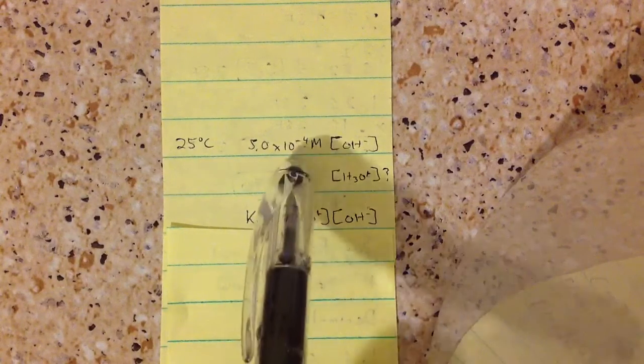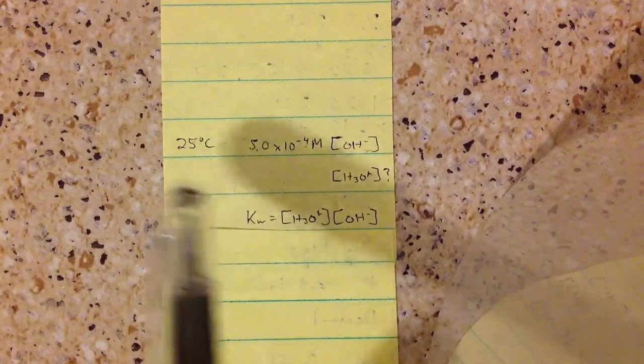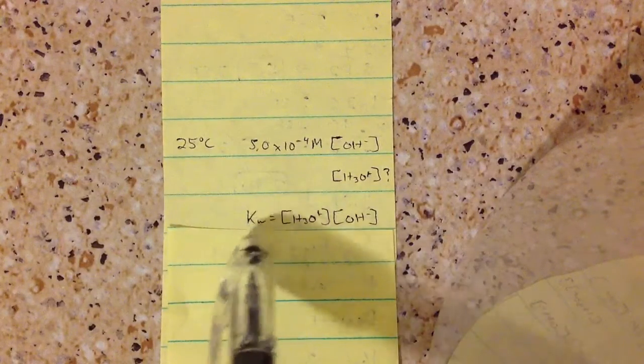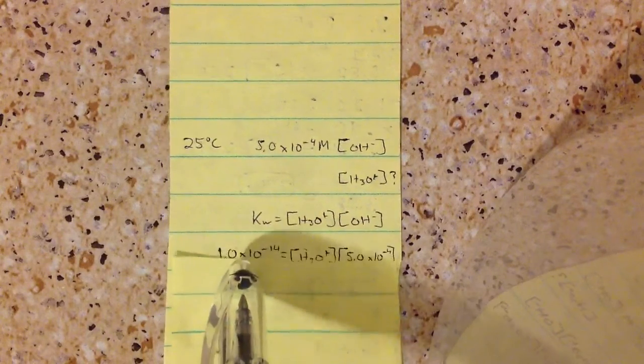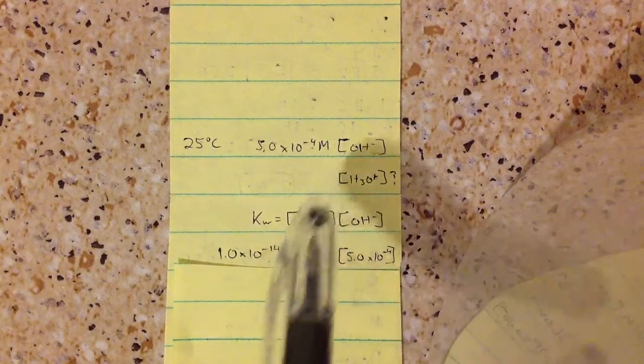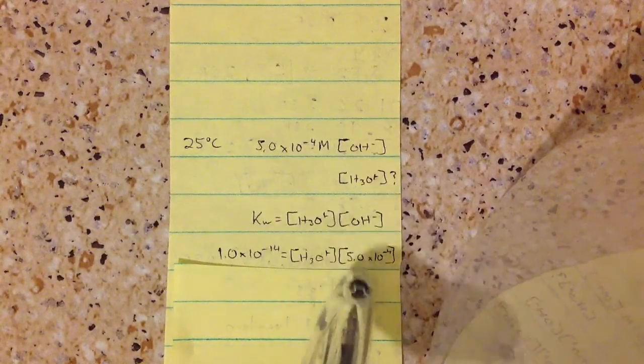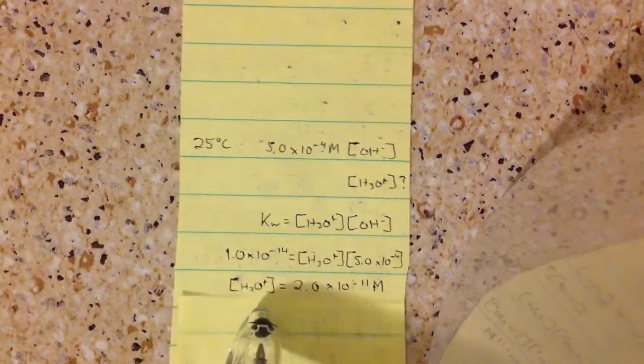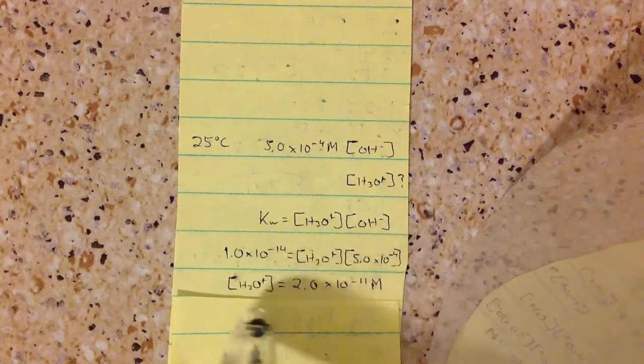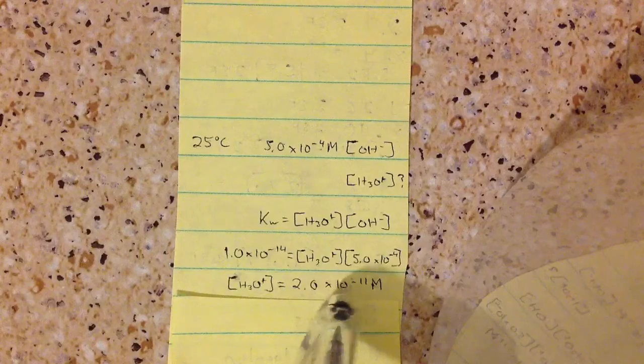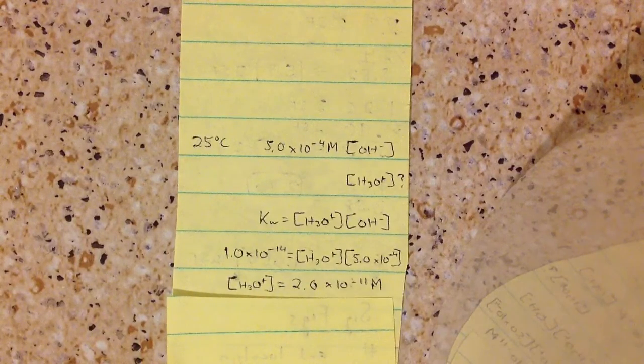And you can just plug in information. So at 25°C, the ion product constant is always 1.0 times 10 to the negative 14. And for hydroxide, you can just plug in that for the same value, and then just divide on each side, and you'll get that hydronium concentration is 2.0 times 10 to the negative 11.